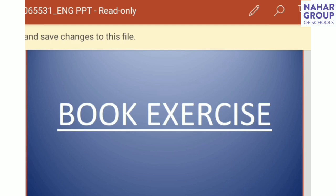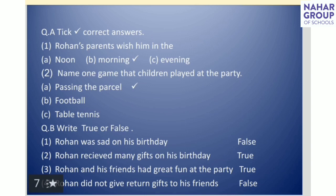Let's begin our book exercise. Question A: write the correct answer. First point: Rohan's parents wish him — options are noon, morning, and evening. The correct option is morning. Second: name one game that children played at the party. Options are passing the parcel, football, and table tennis. The correct option is passing the parcel.